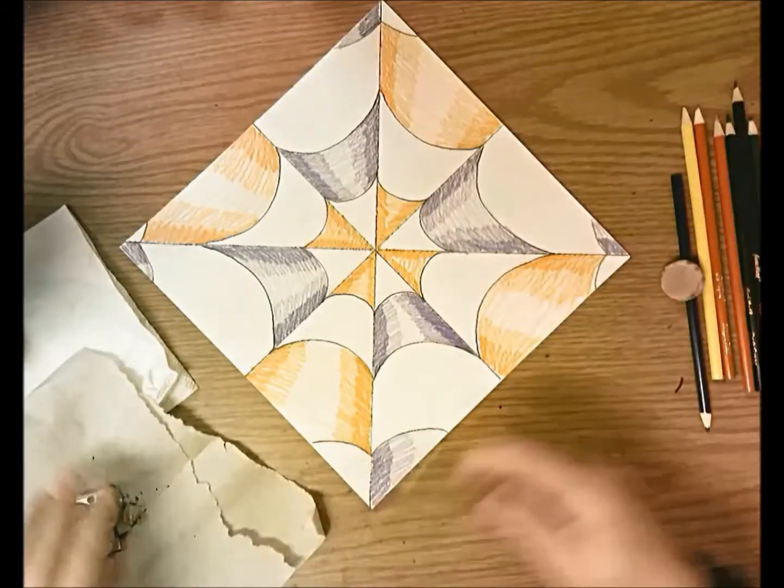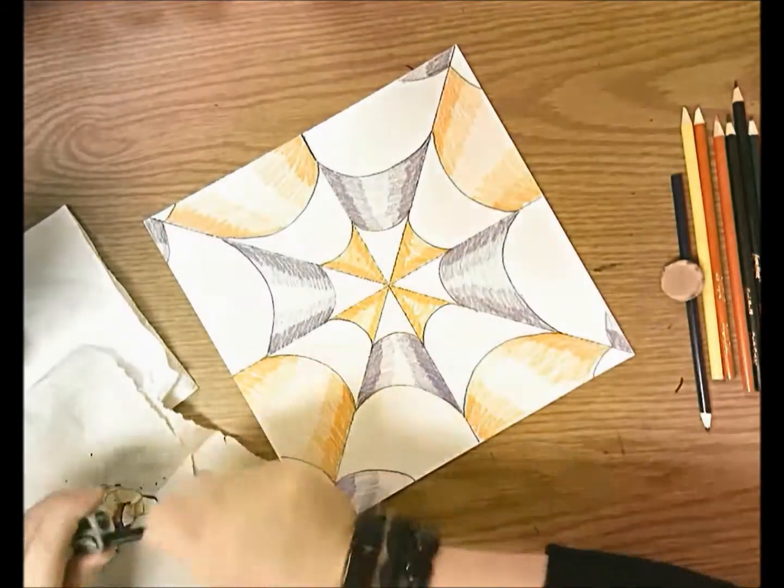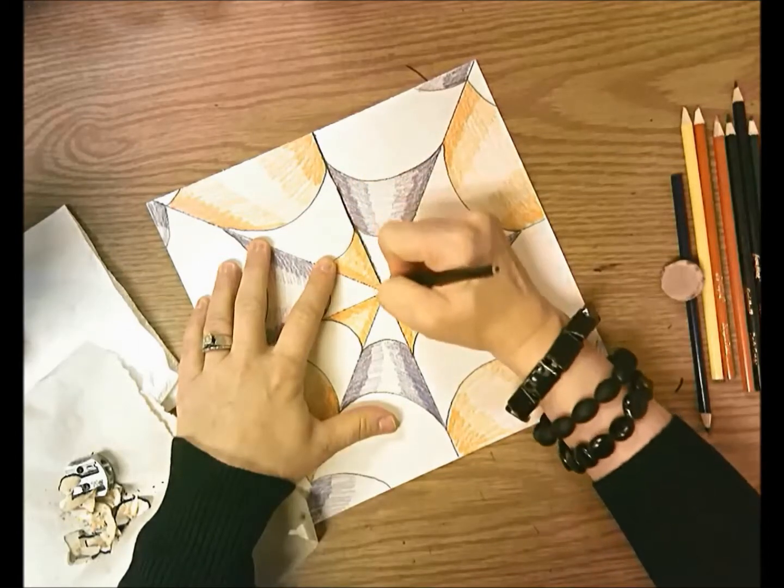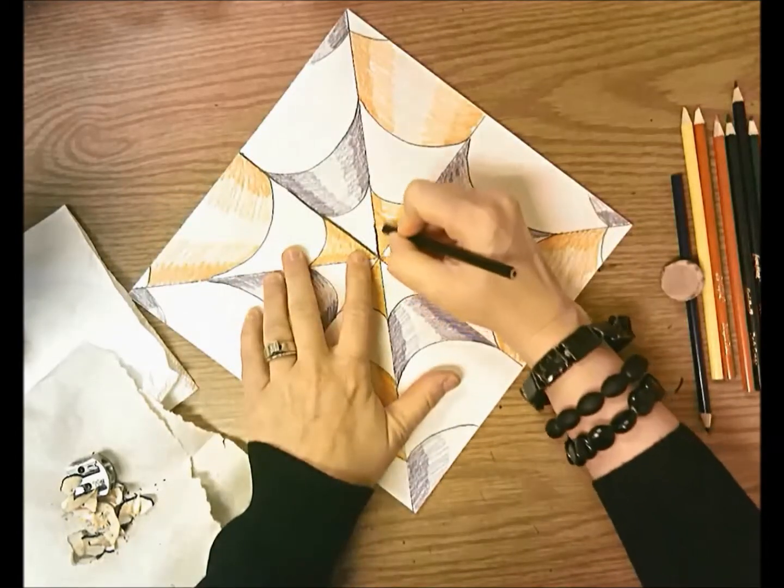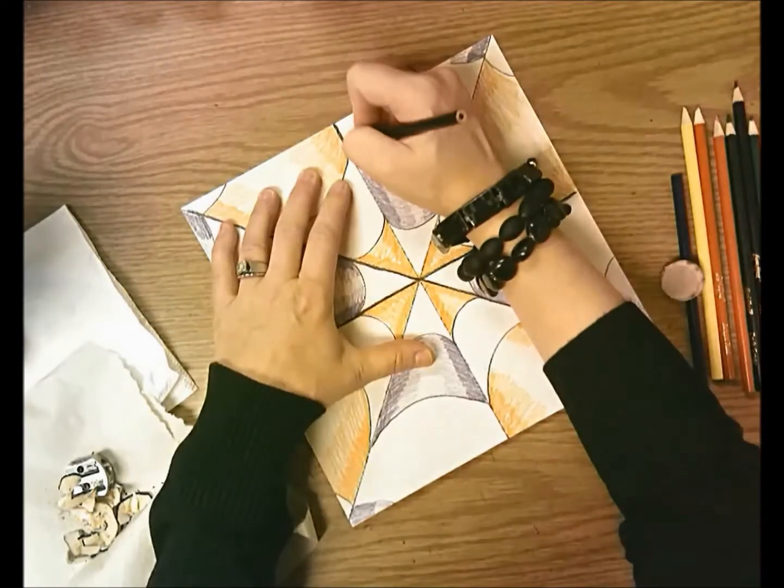And then the very last step you're going to do is take a black colored pencil and trace over your pencil lines. This will help to create the illusion that this space here is farthest away from us because it's the darkest value. It's important that you do this step neatly.